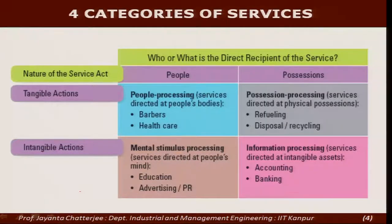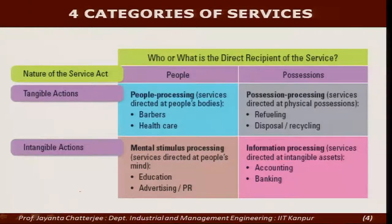The last quadrant is intangible actions on possessions. This can be easily understood as banking or accounting, where there is an intangible, information-oriented interaction related to material possessions or money that you have — and therefore that becomes a separate category which we call information processing. So the four kinds of services are: people processing, possession processing, mental stimulus processing, and information processing, derived from the spectrum of tangibility and intangibility. The boundaries among these four quadrants are often diffused, and we will see examples of services that sit between two quadrants as we go along.